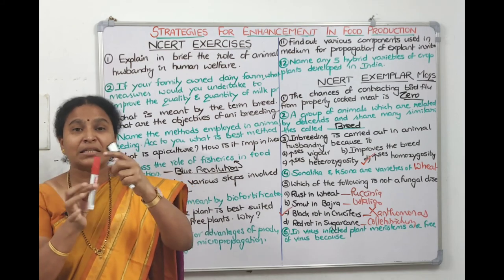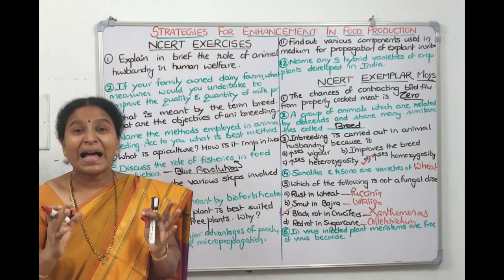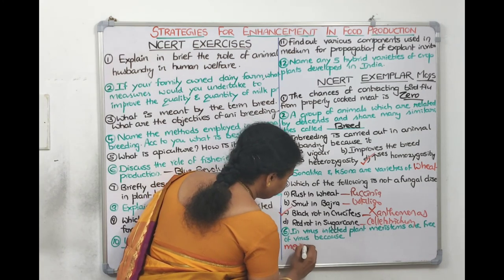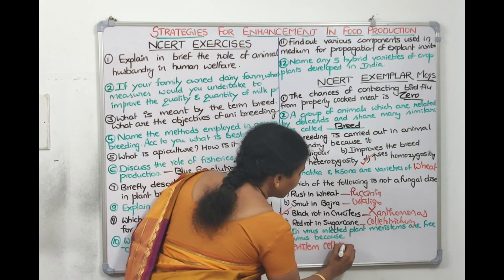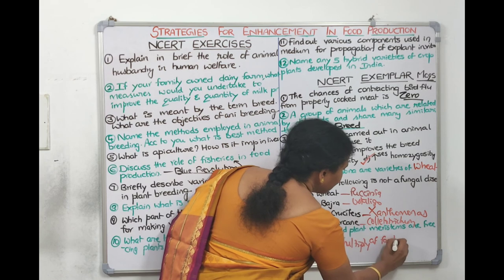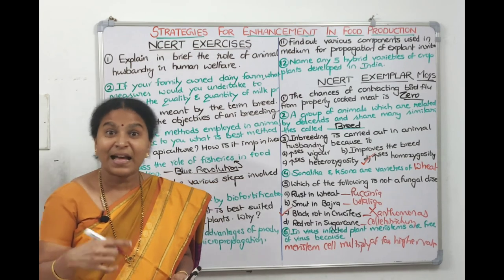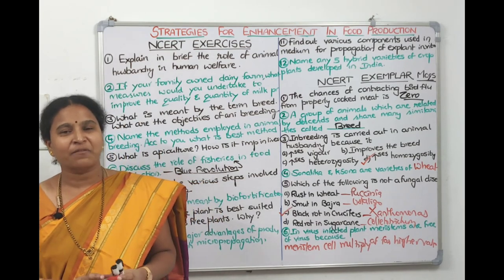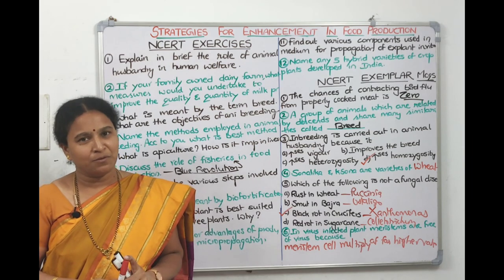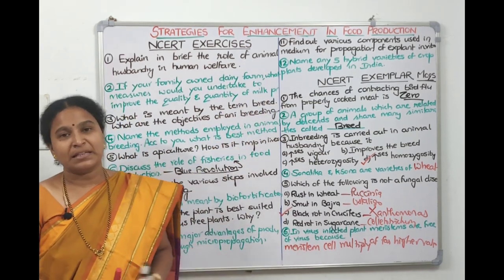Fifth exemplar question: in a virus-infected plant, why are meristems free of viruses even though the whole plant is infected? Because meristematic cells multiply at a far higher rate than viral multiplication, giving no scope for the virus to enter. So meristematic cells always remain virus-free.